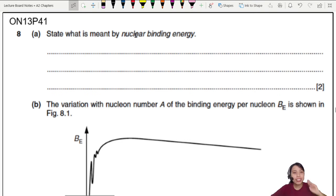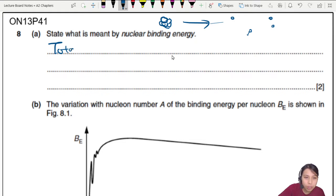ON13 P41 question 8: State what is meant by nuclear binding energy. So binding energy - think of a nucleus full of nucleons. If you want to separate them all to infinity, very far away, how much energy would that take? That's nuclear binding energy. We can say this is the total energy required...